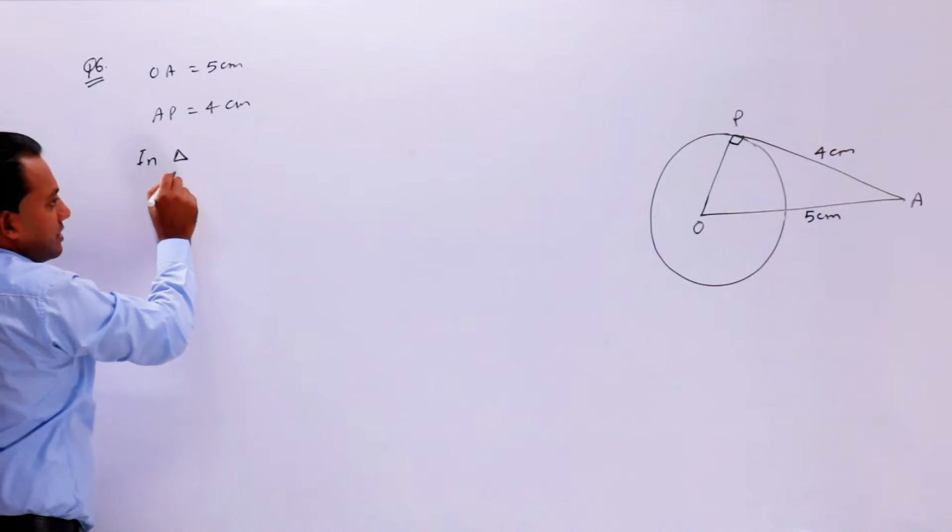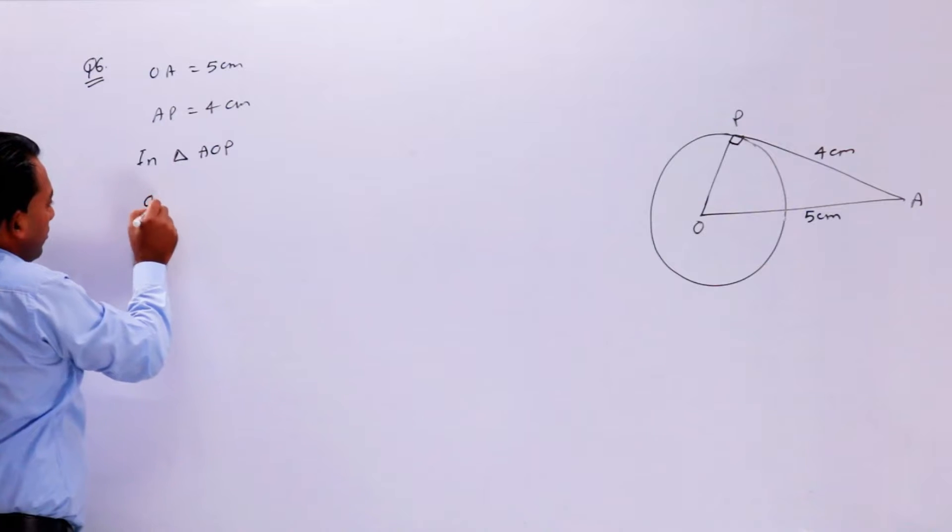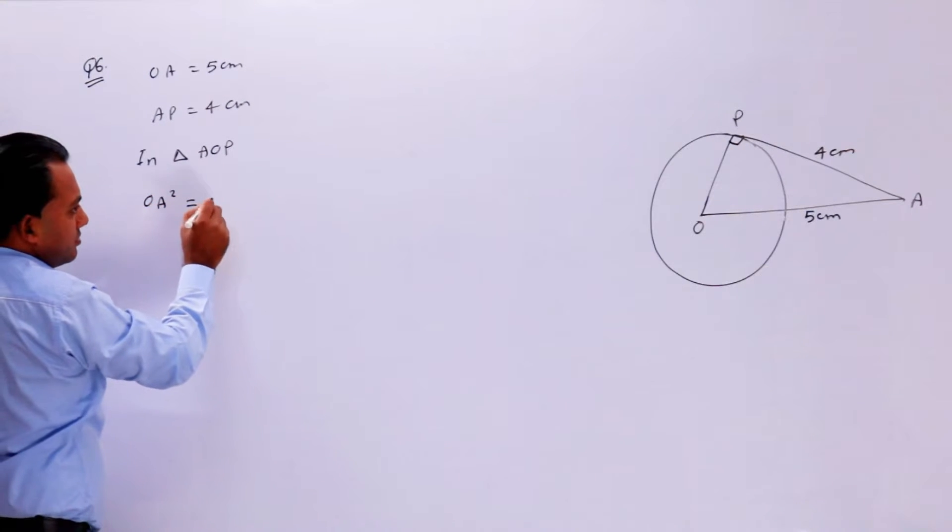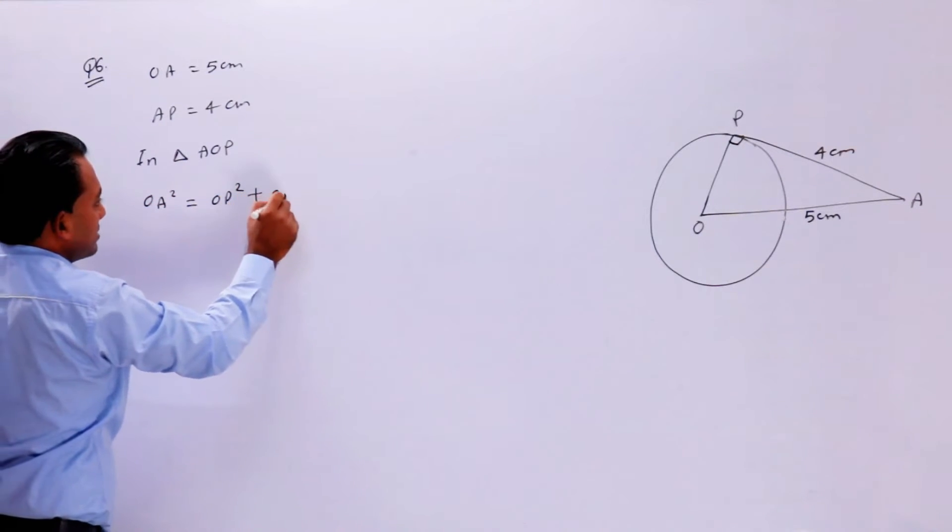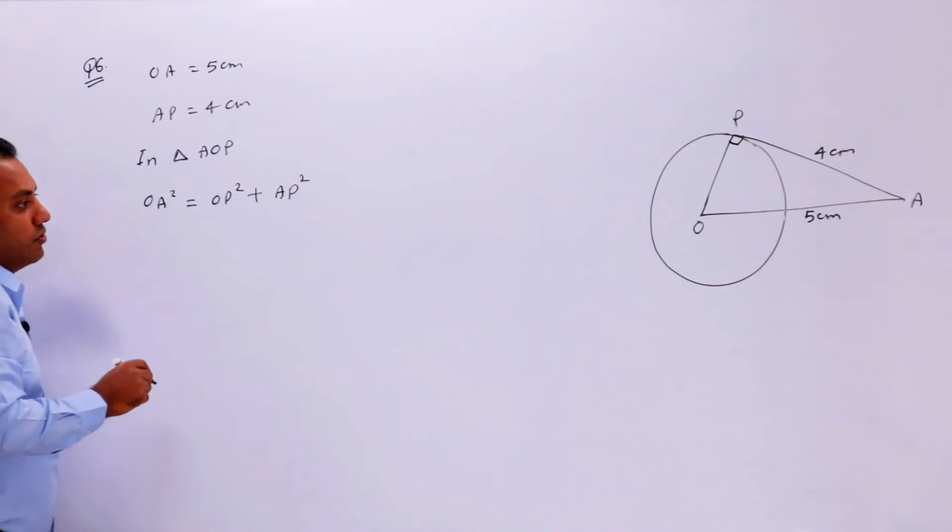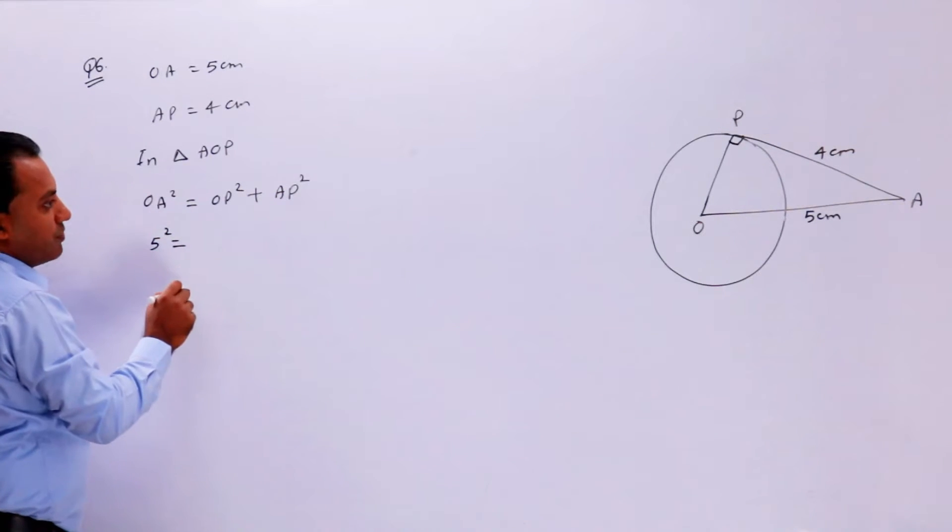In triangle AOP, OA square is equal to OP square plus AP square. OA square, 5 square.